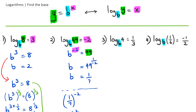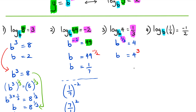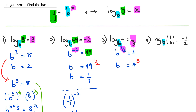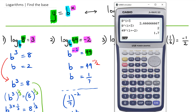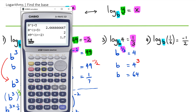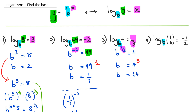The next question has b raised to the power of one third equal to 4. The power in log form is always at the end. To get b by itself we flip the power — one third becomes 3 — so b equals 4 cubed, which is 64. Let's verify: 64 to the power of 1 over 3 in the calculator gives us 4, so that's correct. The concept of flipping the power absolutely works.